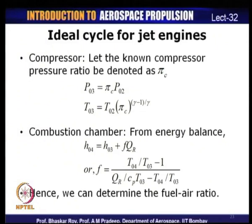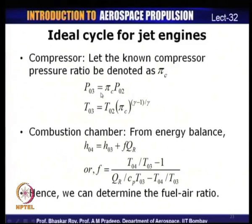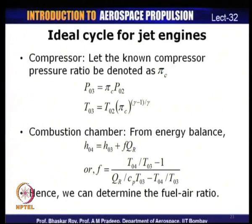For the compressor, the compressor pressure ratio pi_c is a known design parameter. The compressor exit stagnation pressure is P03 equals pi_c times P02. The compressor exit stagnation temperature is T03 equals T02 times pi_c raised to (gamma minus 1)/gamma, from the isentropic relation. We have now calculated stagnation temperatures and pressures up to the compressor exit.